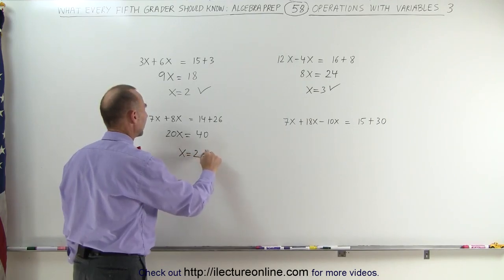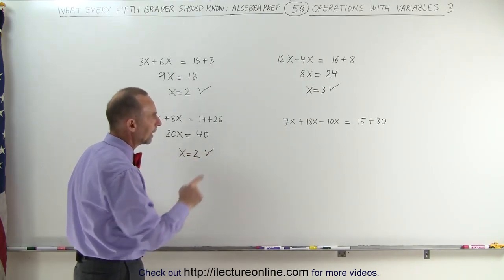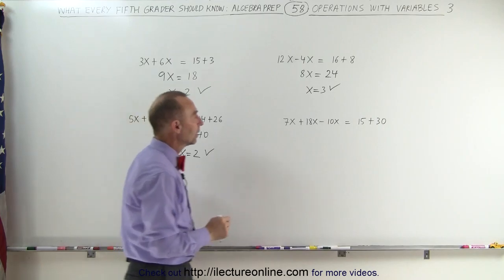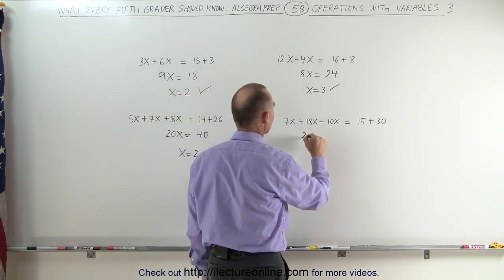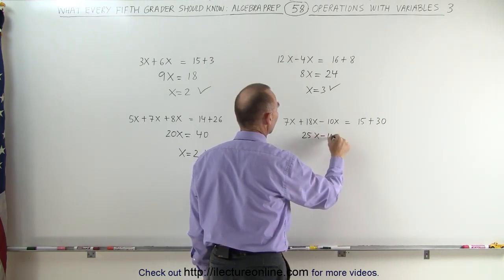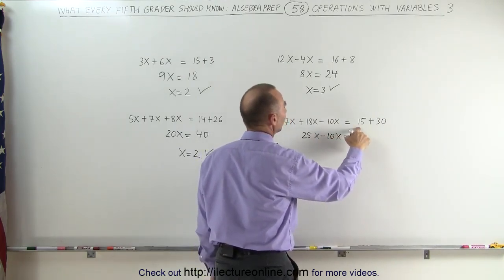Now we ask ourselves the question, 20 times what number gives me equal to 40? And then I realize if x is equal to 2, 2 times 20 is 40, therefore x must equal 2. And that's the correct answer for that one.